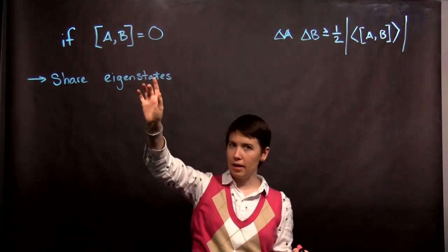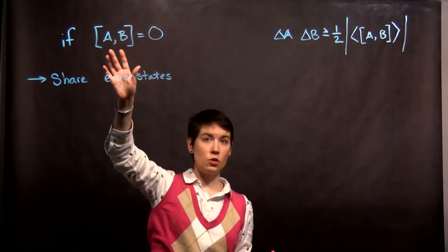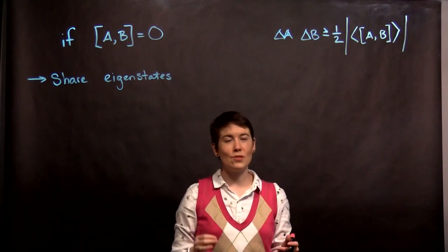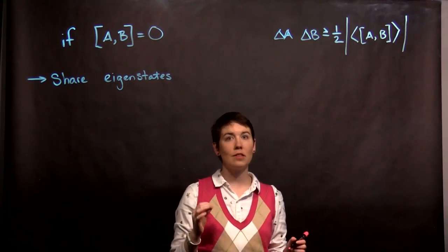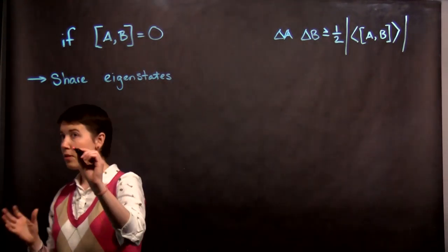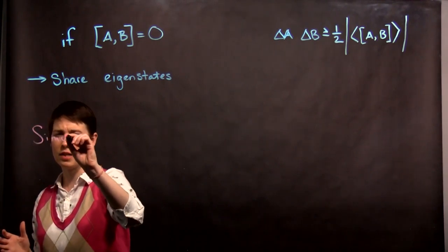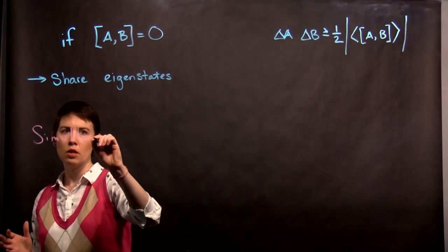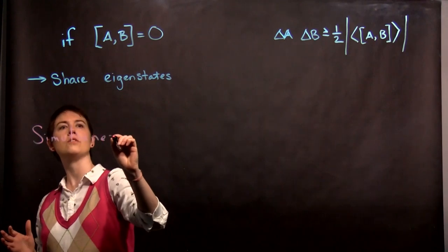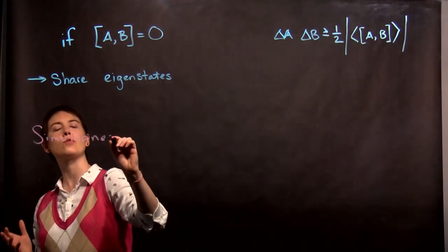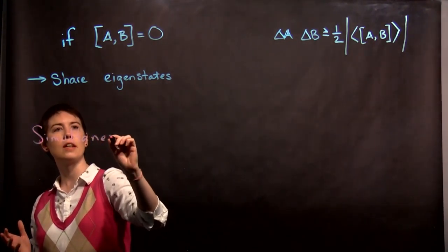But in the case where the commutation is zero, that actually says you can simultaneously measure them. So at the same time, the simultaneous part is important. We can simultaneously know A applied to our state and B applied to our state.